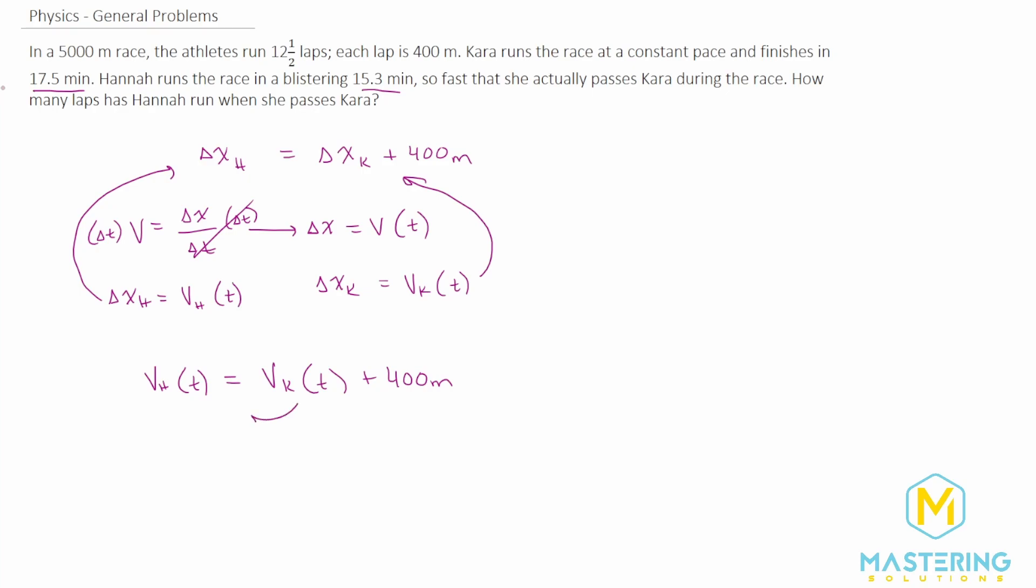So we have 400 meters equals velocity of Hannah times time minus the velocity of Kara times time. And now we want to factor out time from this. So we have 400 meters equals time times the velocity of Hannah minus the velocity of Kara.